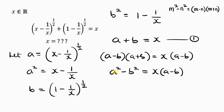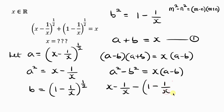Now what is a squared? We have a squared equal to x minus 1 over x, so I'm writing x minus 1 all over x, minus b squared. What is b squared? That is 1 minus 1 over x, so I open a bracket and write 1 minus 1 all over x, close the bracket, equal to x times a minus b.